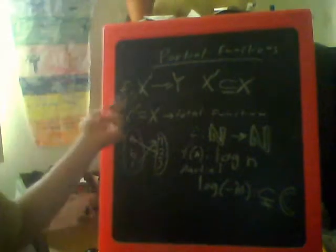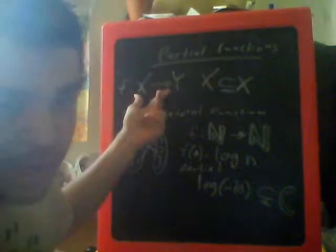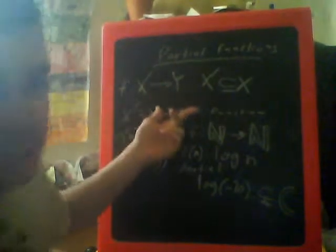So, here we have the X, which is the domain, mapped into the co-domain, which is Y. Simple input-to-output relationship, like a typical function.